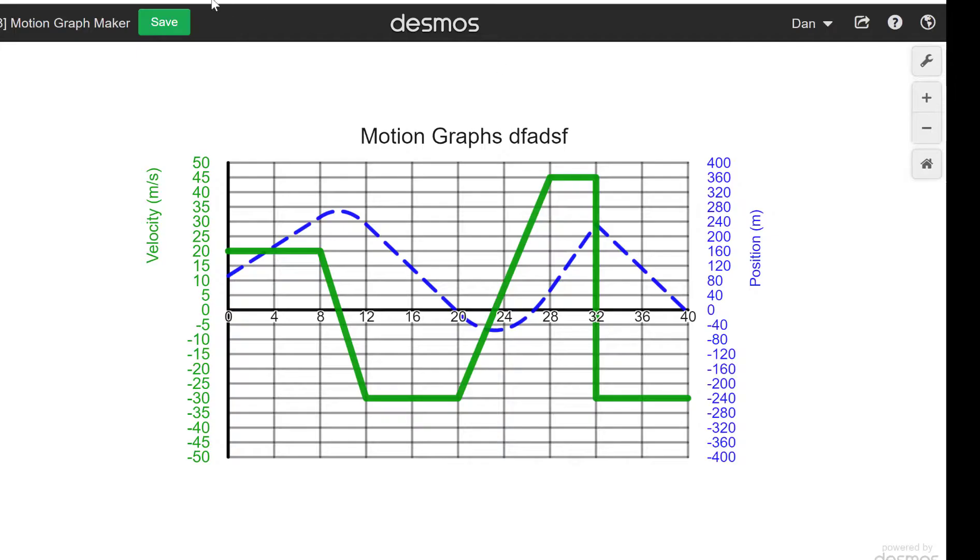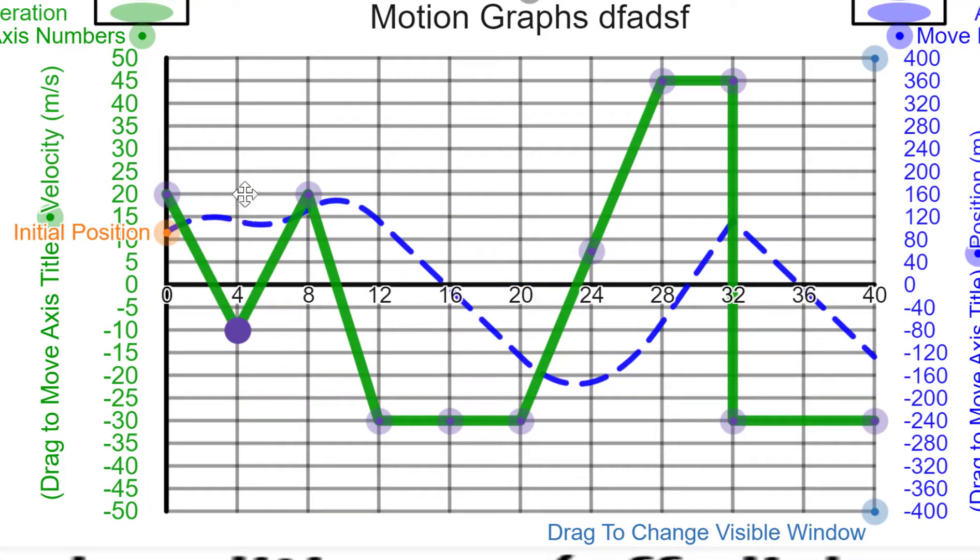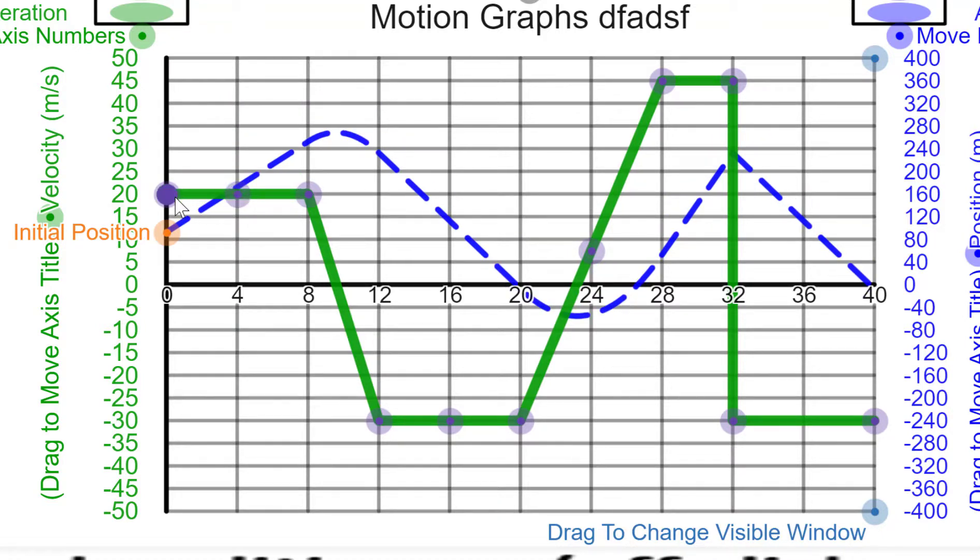So again, probably the most useful feature is when you click on the X or Y axis, and then you can just drag these VT lines, and they will move accordingly. So for example, you can see constant velocity here on a VT graph is a horizontal line, but on a DT graph is a constant straight slope.